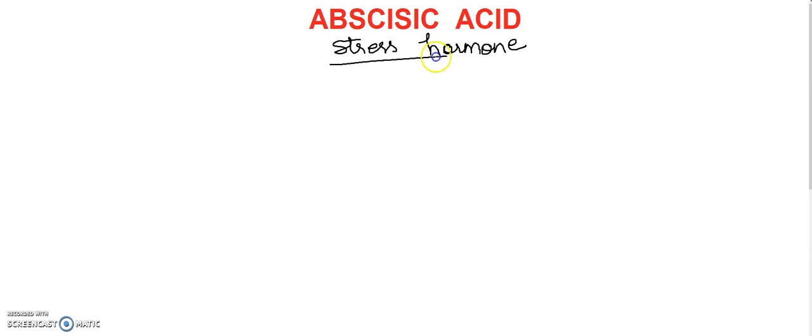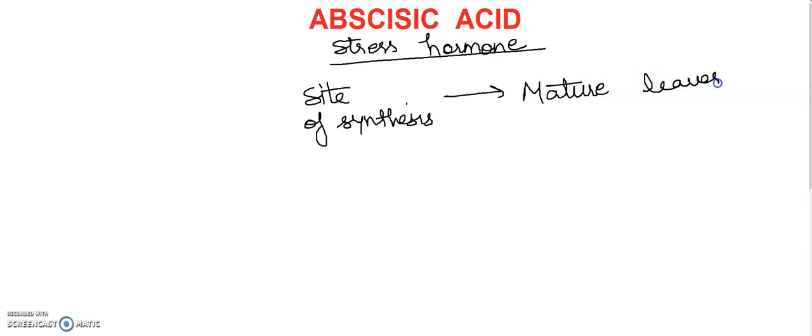And next point is where it is synthesized we are going to discuss. Site of synthesis. Where abscisic acid is synthesized. You can write here mature leaves. Abscisic acid mature leaves may synthesize. Roots may and seeds may.